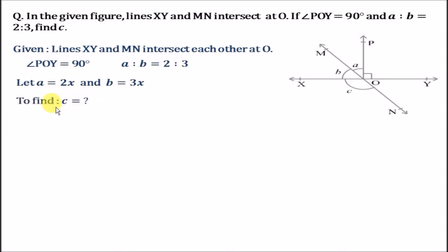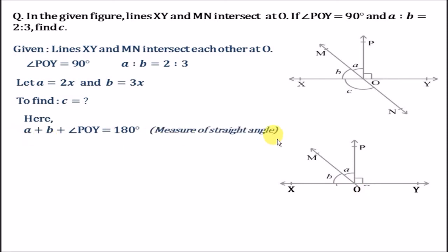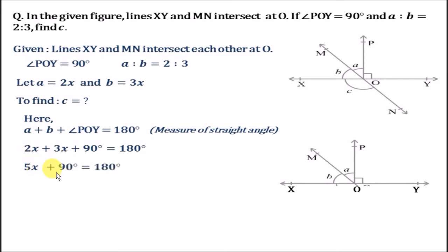We need to find the value of c. There are three angles over straight line XY: a, b, and angle POY. So a plus b plus angle POY equals 180 degrees, as their sum gives us the straight angle XOY. Putting the values: 2x plus 3x plus 90 degrees equals 180 degrees. Adding like terms, 2x plus 3x equals 5x, so 5x plus 90 degrees equals 180 degrees.